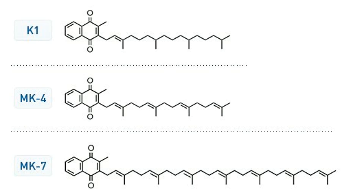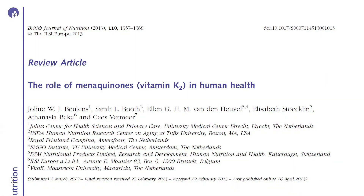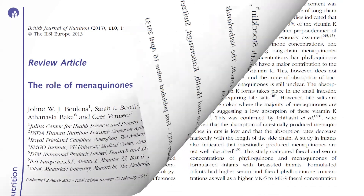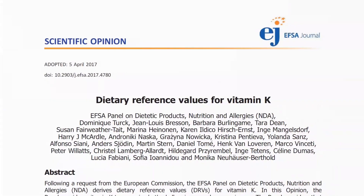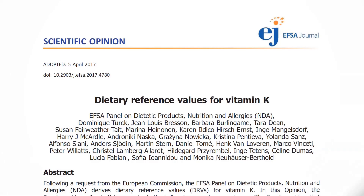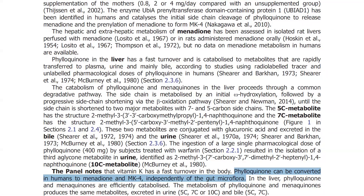The most important forms for human health are MK4 and MK7. MK4 is the form most commonly used in animal tissues, and animals including humans have the ability to convert K1 into MK4. The concern is that this conversion is underexplored in humans and may not fully meet demands, especially if there isn't much K1 circulating in the first place.